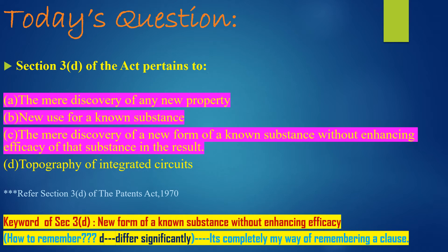I can explain this in very common terms. Mathematically, 2 plus 2 equals 4. If 2 plus 2 equal to 4 is the case — that means the situation is like this — then this situation comes under Section 3, Clause D of the Patents Act 1970, and for this reason, that particular invention cannot be patentable.